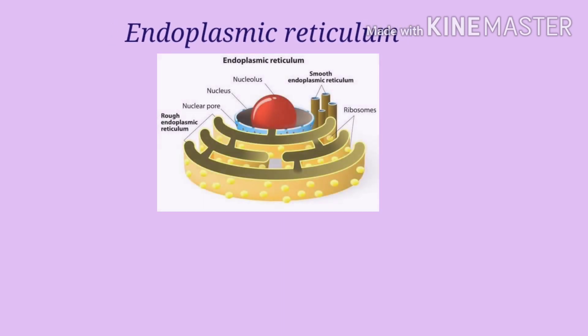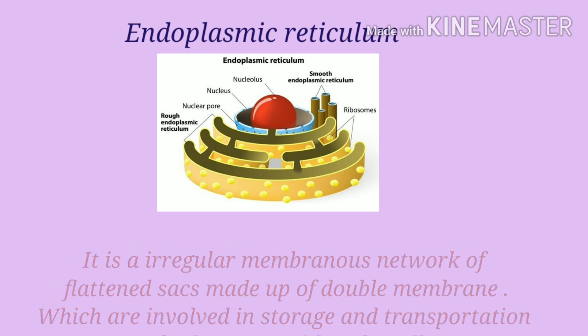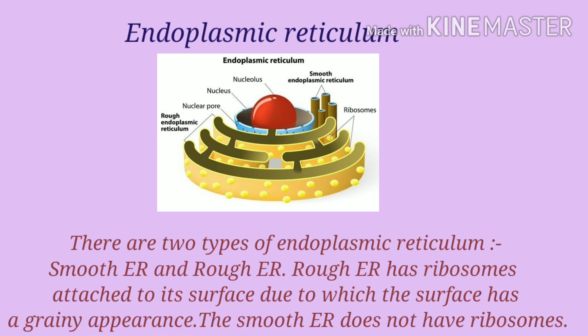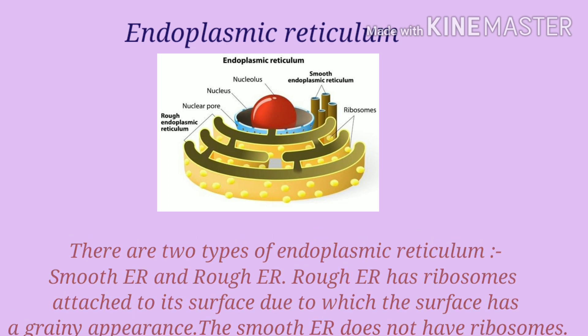Next one is endoplasmic reticulum. It is an irregular membranous network of flattened sacs made up of double membrane which are involved in storage and transportation of substances within the cell. There are two types of endoplasmic reticulum: smooth endoplasmic reticulum and rough endoplasmic reticulum. Rough endoplasmic reticulum has ribosomes attached to its surface, giving it a grainy appearance. The smooth endoplasmic reticulum does not have ribosomes.